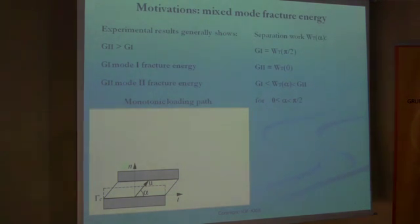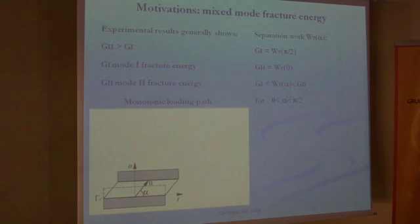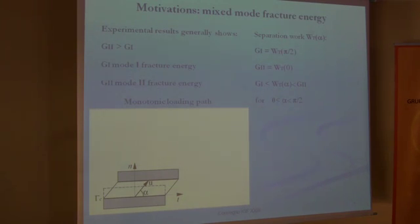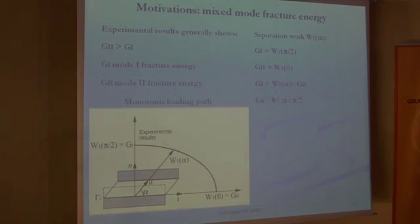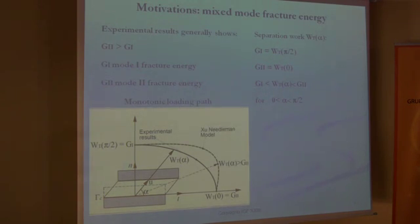The motivation: it is well known that experimental results of the delamination test produce a mode 2 fracture energy greater than mode 1, G2 greater than G1. In a monotonic loading path, the separation work Wt, as a function of angle alpha, is always confined between G1 and G2. Nevertheless, as shown in the present polar diagram, there are several considered models which do not verify this condition, such as the XU-Needleman model, which produces a separation work in mixed mode delamination greater than G2, the mode 2 fracture energy.